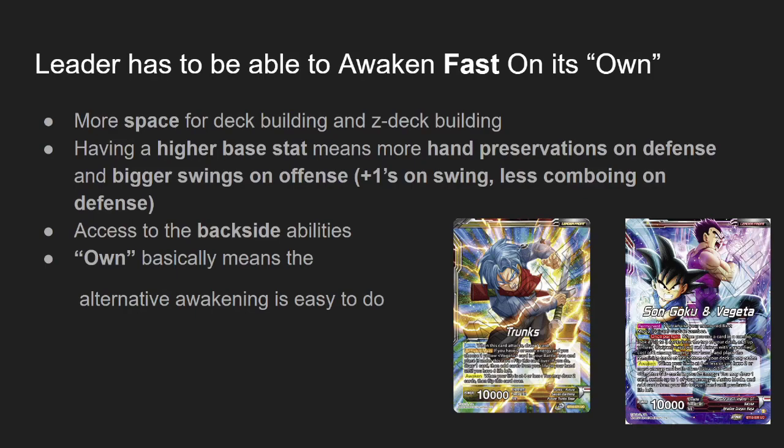For the Gogeta front side, you just need a Goku and Vegeta in your Z-energy. Since the leader's front side lets you look at the top three cards of your deck for any red card, and your whole deck is comprised of GT-series Goku's and Vegeta's, this basically allows you to consistently find your awakening pieces. That's a criteria I use to determine whether a leader is good.